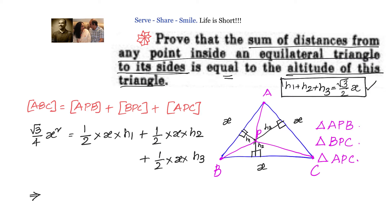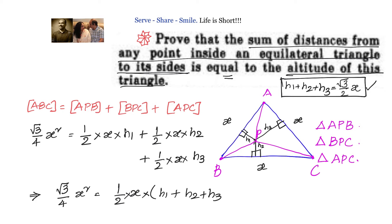Now let us simplify. We write root 3 by 4 into x squared equals half into x, multiplied by the quantity h1 plus h2 plus h3. Cancelling x once and simplifying the factor of 2, we are left with h1 plus h2 plus h3 equals root 3 by 2 into x. That is exactly what we needed to prove.